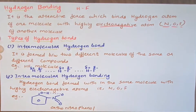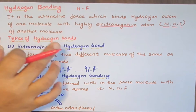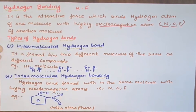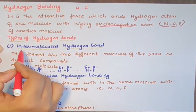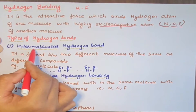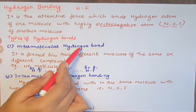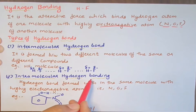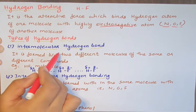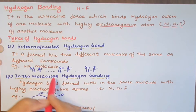Hydrogen bonds have two types: the first one is Intermolecular Hydrogen Bonding and the second is Intramolecular Hydrogen Bonding.